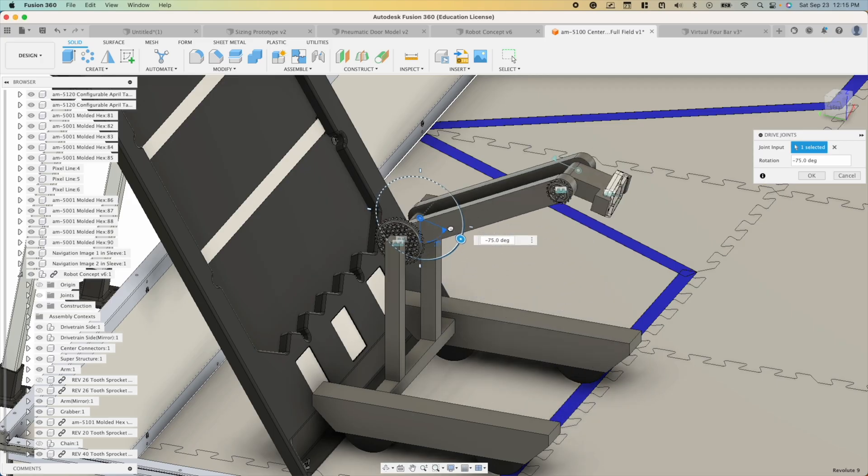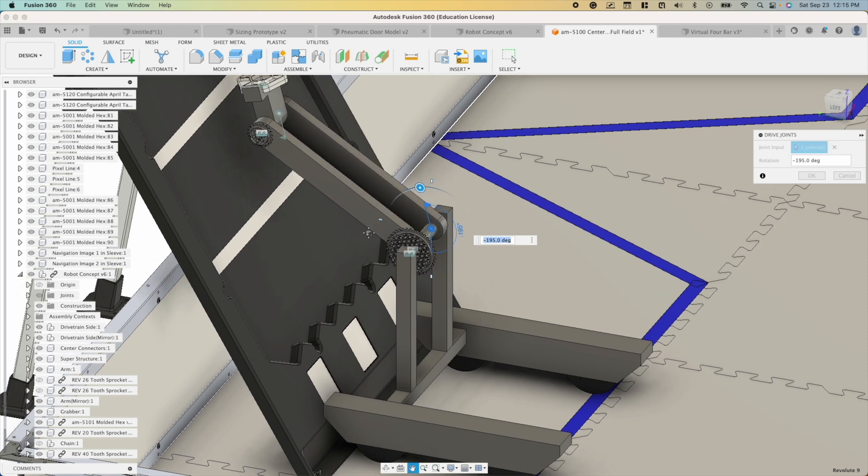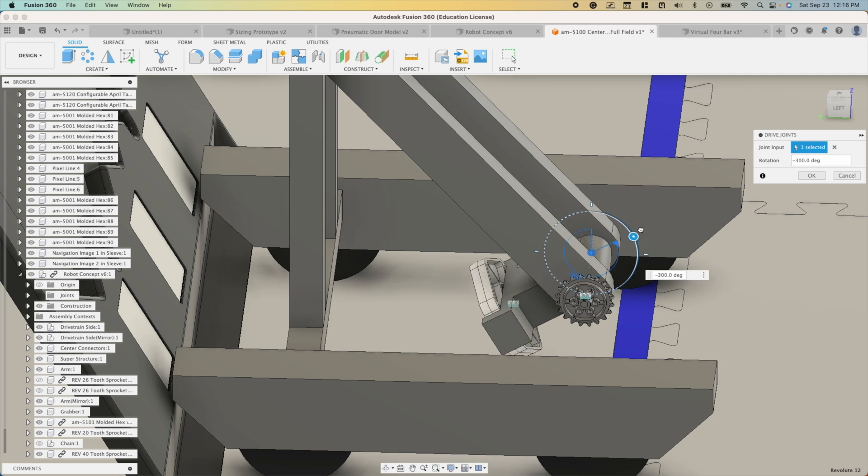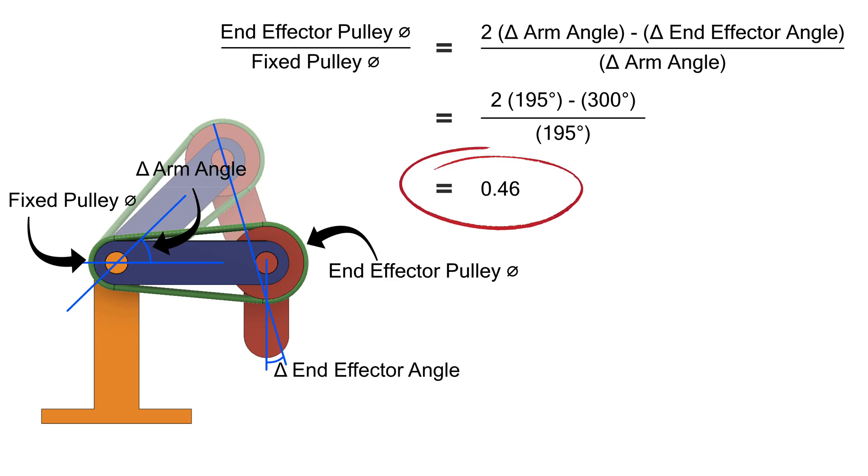In this case, some modeling suggests that I'd want the arm to be at an angle of about 195 degrees and the end effector to rotate about 300 degrees. Plugging it into the equation, I get a result of 0.46. You'll note that this gear ratio is less than 1,